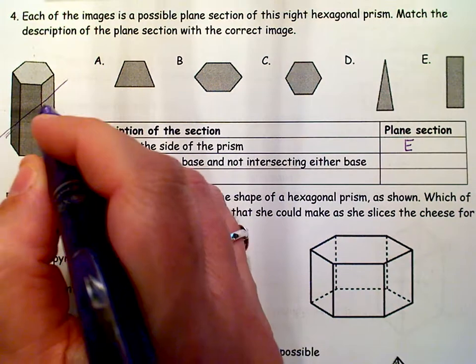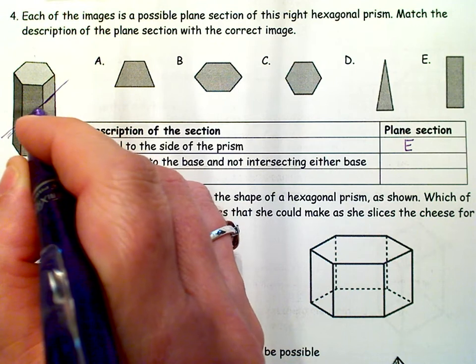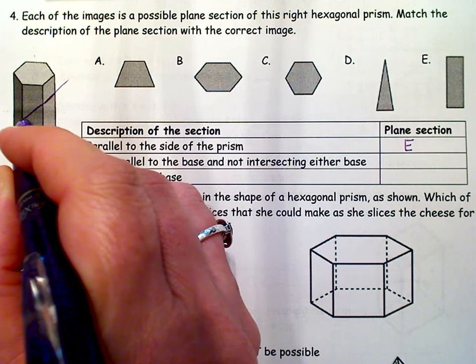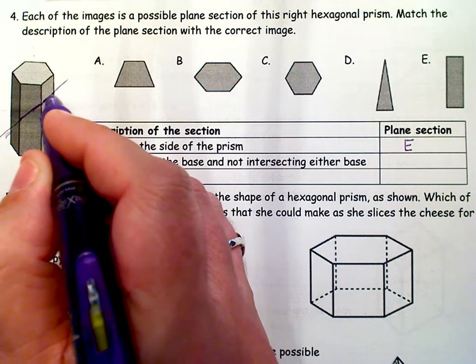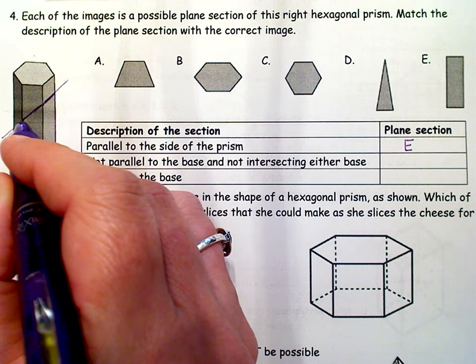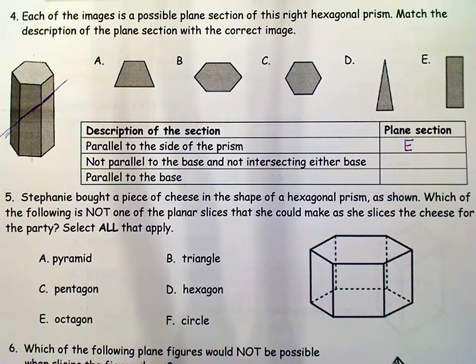Now what happens is when it comes right here, because it's not going straight across, it's going to give you a longer piece. These are straight across, but this one's going to be at an angle, so it's going to give you a longer section of that hexagon.